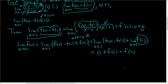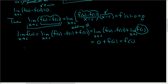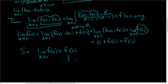So we showed that the limit as x approaches c of f of x is equal to f of c. This is precisely what it means for a function to be continuous at c, and so we're done. Therefore, f is continuous at x equals c. And that is how you prove that if a function is differentiable at a point, it is continuous there.